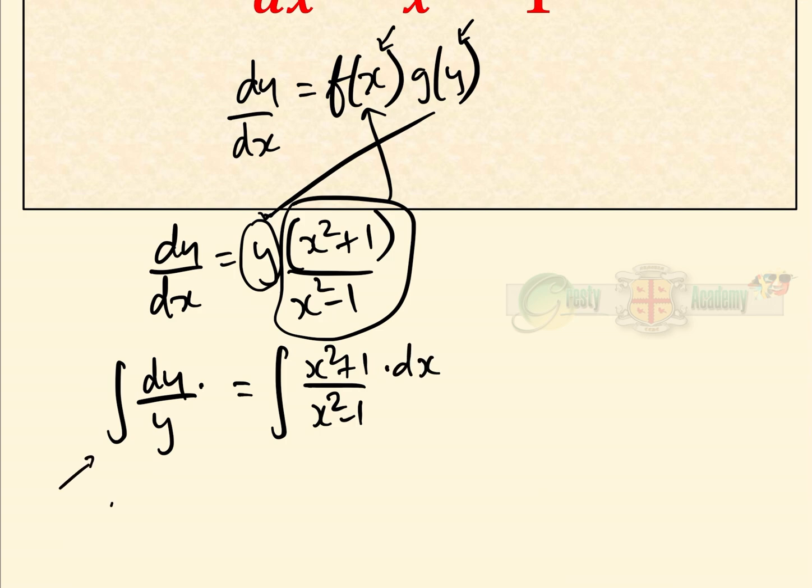It's the right-hand side we have to look at. Because x² + 1 over x² - 1 are the same order—they're both quadratics—we normally have to do long division.